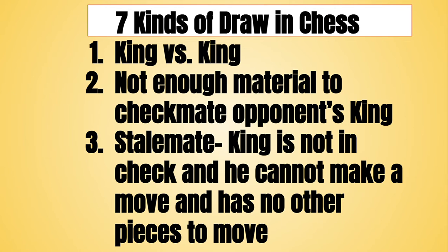Number two: there's not enough material to checkmate the opponent's king. You are missing a piece or two pieces to be able to organize a checkmate, so there's no way you can organize a checkmate and therefore it is a draw because you don't have enough material.